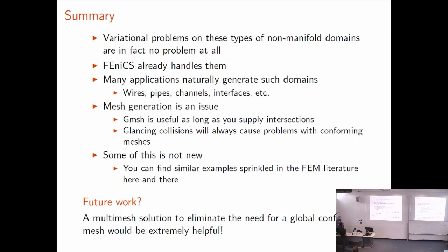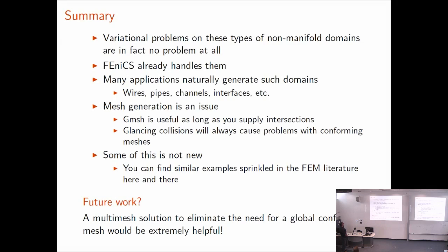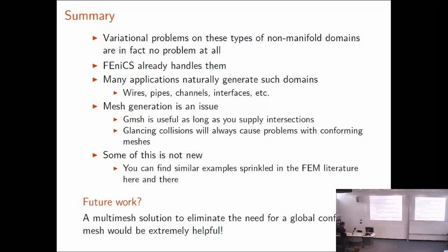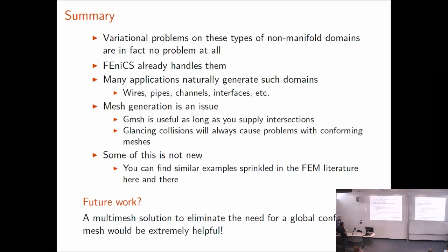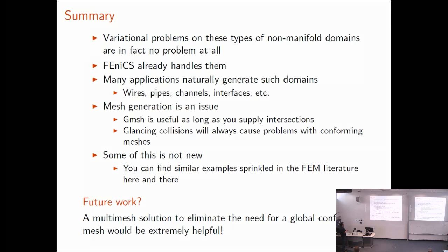To summarize: variational problems on these types of non-manifold domains are, in fact, not a problem at all — FEniCS already handles them out of the box. Many applications naturally generate such domains: anything involving wires, pipes, channels, or interfaces. For randomly generated rectangular domains like ours, mesh generation is really an issue. I did some literature searching and found a few examples of similar simulations sprinkled throughout the literature, so I can't claim any of this is entirely new. This is a bald plea for a multi-mesh solution for these domains.